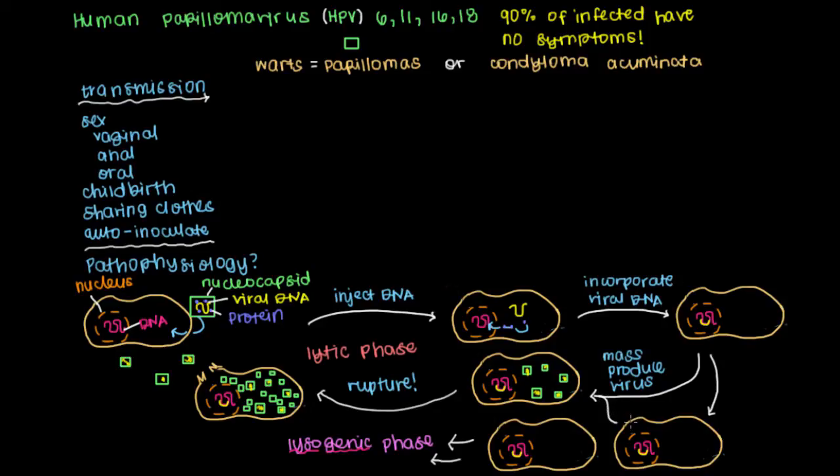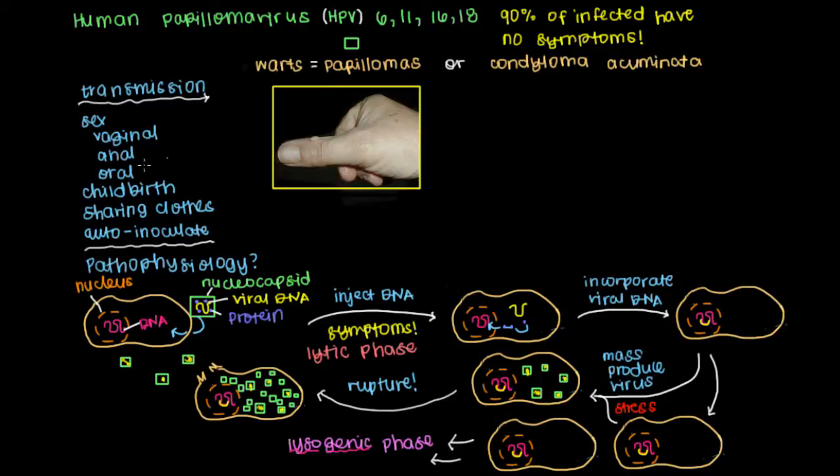The key trigger for going from the lysogenic phase to the lytic phase is stress, from sunlight, emotional stress, or decreased immunologic function. All of these can lead toward the lytic phase. It's through the lytic phase that we end up getting symptoms. Warts occur on the hand or on the genitals.